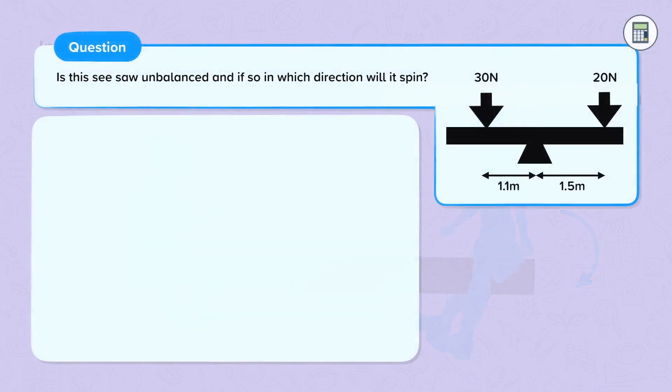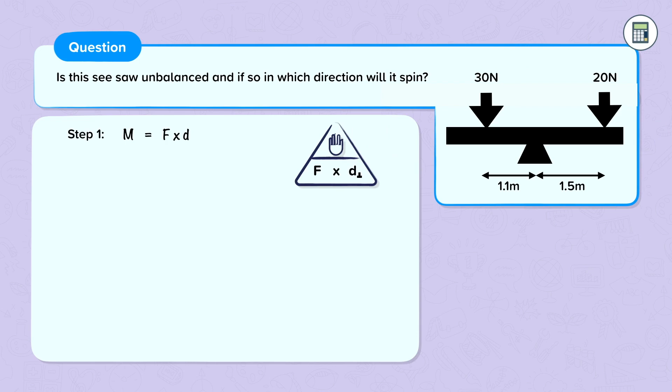Let's look at an example. Is this seesaw unbalanced? And if so, in which direction will it spin? And here we have a seesaw. Step 1: Moment is force times distance. Or we use this formula triangle.